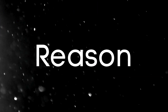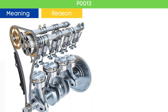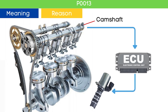Now, let's learn why P0013 was triggered. The camshaft position sensor measures the position of the camshaft and sends this signal to the ECU. The ECU then sends a pulse command to the variable valve timing VVT solenoid to advance or delay the cam position based on the engine load and speed.